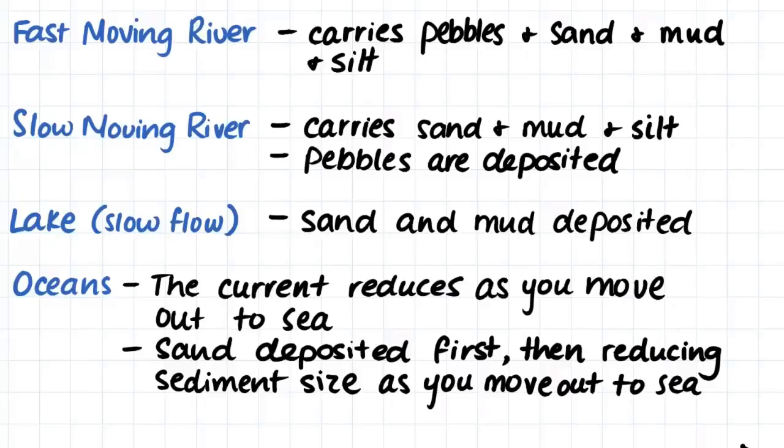Oceans have varying levels of energy. The current reduces as you move out to sea. Sand is first deposited as it is the larger sediment. As you move out to sea, the energy of the flowing water will reduce and the size of the sediment that the water will be able to carry will have to reduce as well. So as you move out to sea, the size of sediment that is deposited slowly decreases.